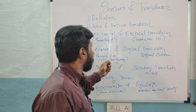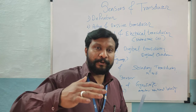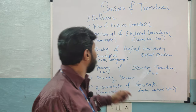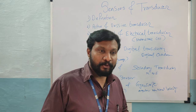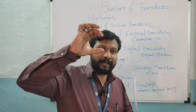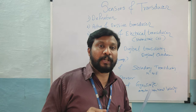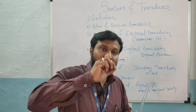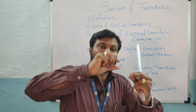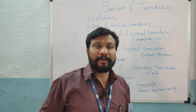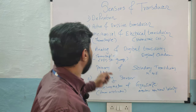A mechanical transducer converts a physical quantity into a mechanical output. An example is the thermocouple: when two dissimilar metals are joined together and heat is applied at the joint, at the output side we get an EMF — electromotive force — which is essentially a voltage. So input is temperature and output is EMF.